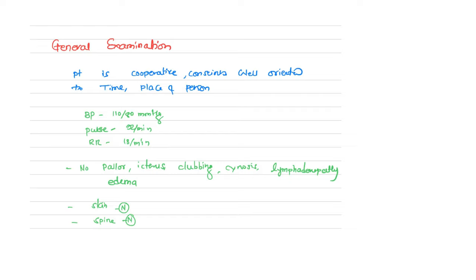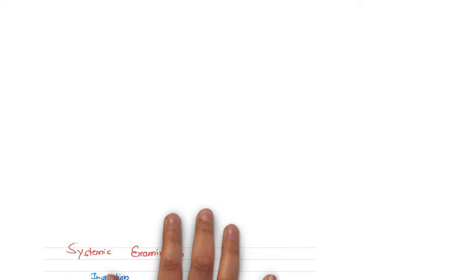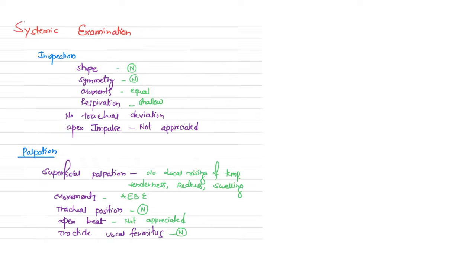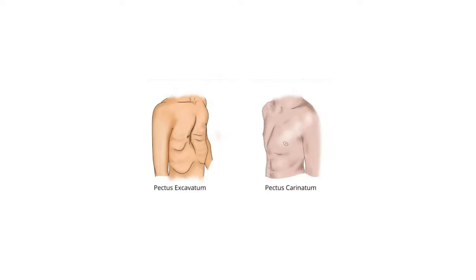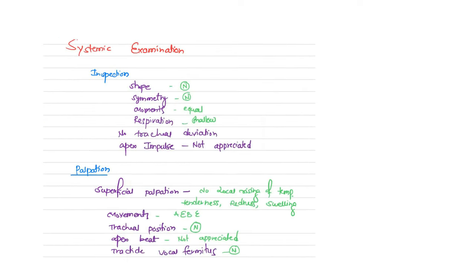Systemic examination — inspection: check for the shape of the chest. Abnormal shapes include pectus excavatum (cobbler's chest) and pectus carinatum. In my patient the shape is normal. Check for symmetry — normal. Movements — equal. Respiration is shallow. Check for tracheal deviation — no tracheal deviation in my patient. Apex impulse is not appreciated.